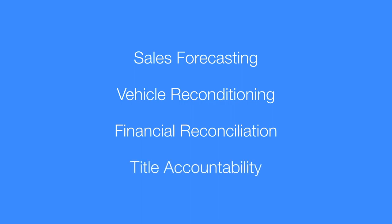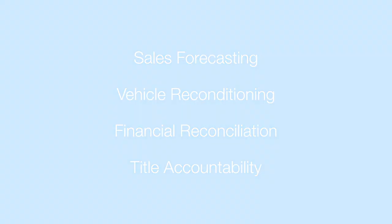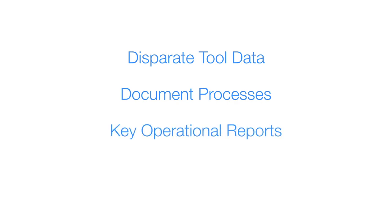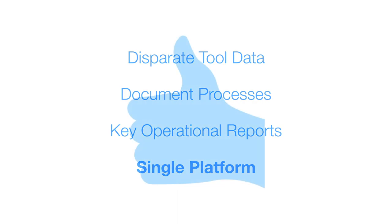To avoid these expensive problems from plaguing his dealership, Patrick needs something that will aggregate his disparate tool data, streamline his existing document workflows and processes, automatically generate his key operational reports, and present everything on a single platform that he can access anytime, anywhere. What Patrick needs is Atlas AI for Auto.